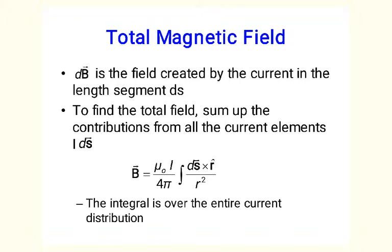dB is not the total field created by the wire. It is just an element of the field created by an elementary current in the length segment ds. To find the total field, you need to sum up all contributions from the elementary currents i times ds. So the total field is given by an integral of mu_0 i divided by 4 pi times the integral of ds-hat cross r-hat divided by r squared. This integral is over the entire length of the wire or entire current distribution. In deriving this formula, we use the fact that i is the same through the whole length of the wire — the current doesn't disappear. Therefore, i is the same for every element ds and can be taken out of the integral.